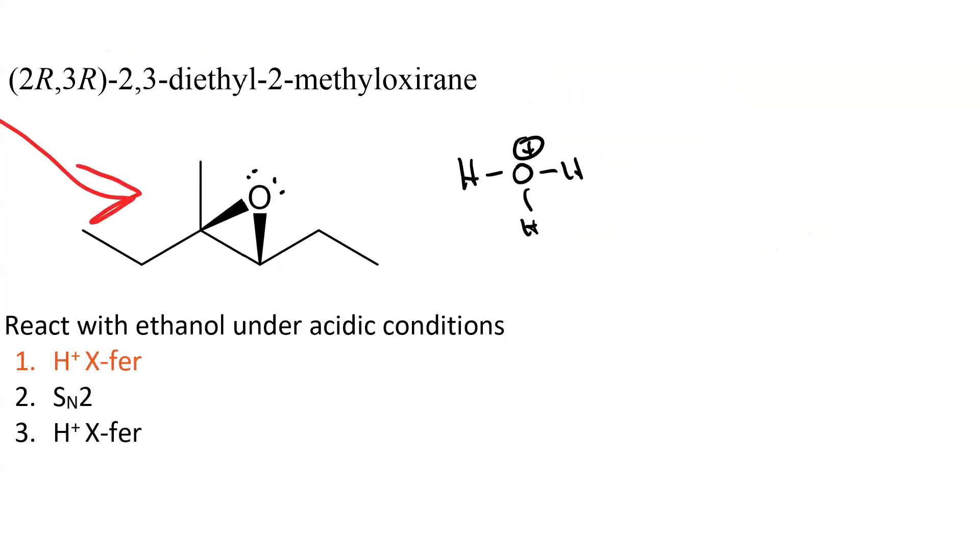Here's the proton transfer step. The epoxide oxygen acts as a base. It takes a hydrogen from the acid. This produces the protonated oxygen, which makes for a good leaving group.